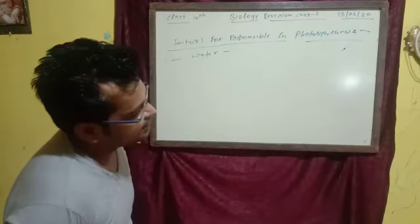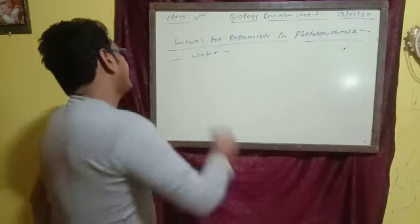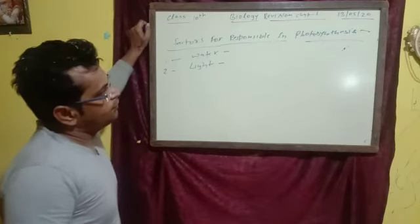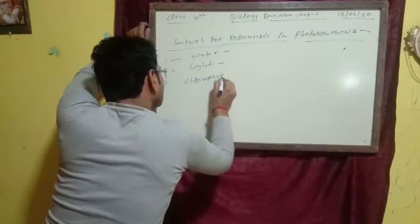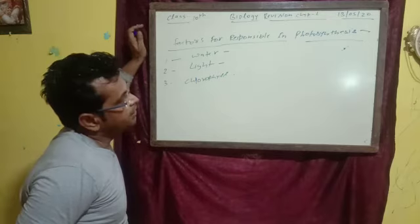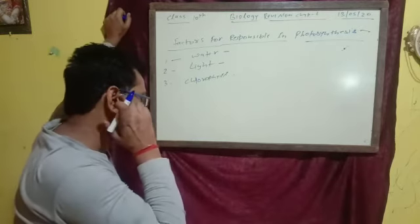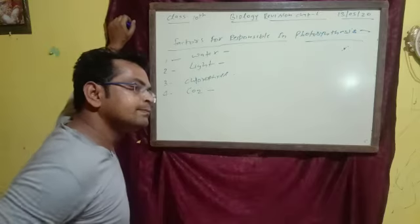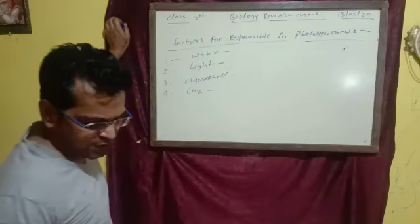Water is a very important factor for photosynthesis. The third factor is chlorophyll — it is also a very important factor for the photosynthesis process. Chlorophyll is found in leaves. Next, carbon dioxide gas is also very important for photosynthesis. So these are the factors which are responsible for photosynthesis.